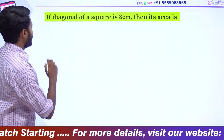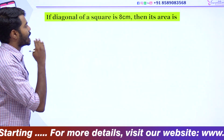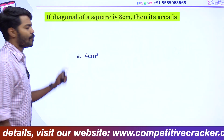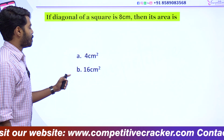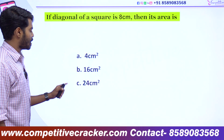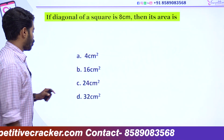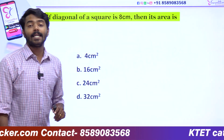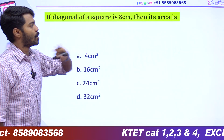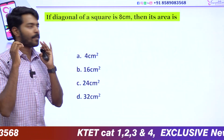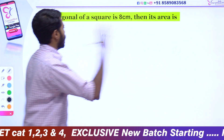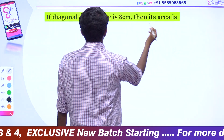As you can see, if the diagonal of a square is 8 cm, then its area is: option A — 4 cm², option B — 12 cm², option C — 24 cm², option D — 32 cm². There are 4 options. I am going to the live class and going to study these equations.